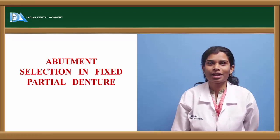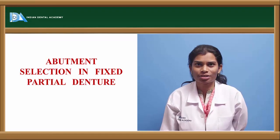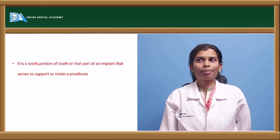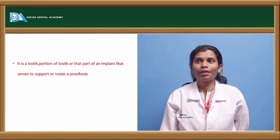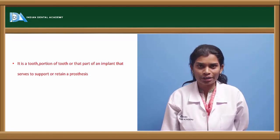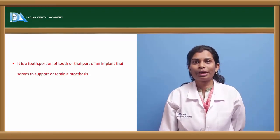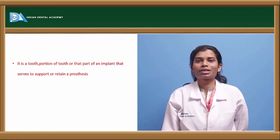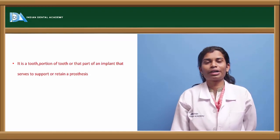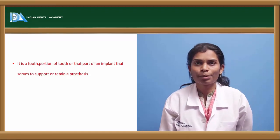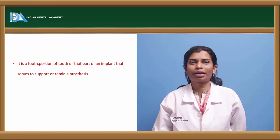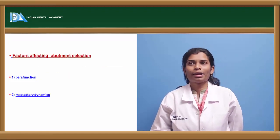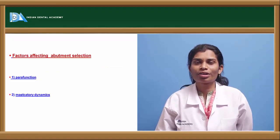Today's topic for discussion is abutment selection in fixed partial denture. An abutment is that part of a tooth or an implant which supports and retains a prosthesis. Abutment is the most important part of a fixed partial denture, and the total success of the FPD is dependent on abutment selection, because these abutments directly take up occlusal loads and transfer them to the periodontium.